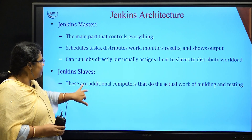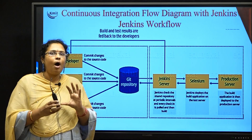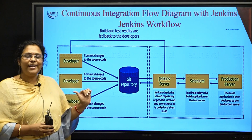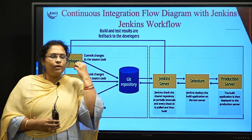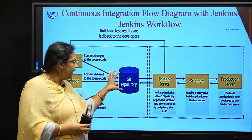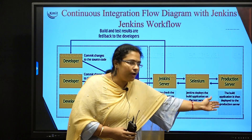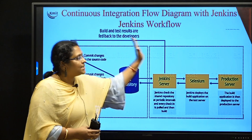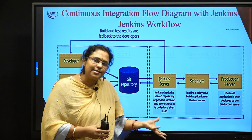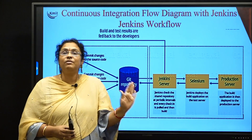Now let us talk about the Jenkins workflow, also called the continuous integration flow diagram. Developers develop the project in different environments and push their code into GitHub. When GitHub is updated with new changes, Jenkins gets triggered immediately. It takes the new updated software from the Git repository, tests it, builds it, and automatically deploys it to whichever production server you want. In our lab, we will learn how this automatic triggering, code fetching, building, testing, and deployment all happens.